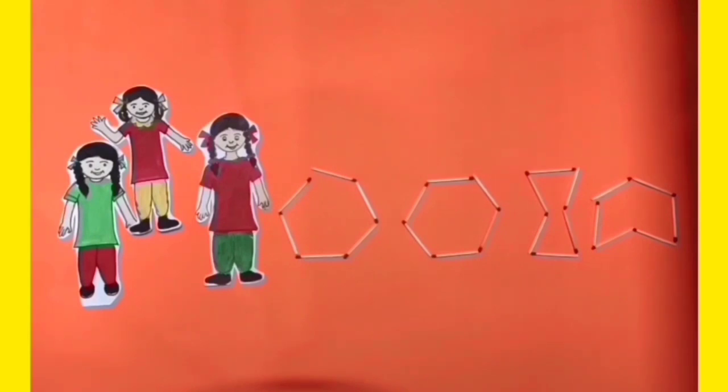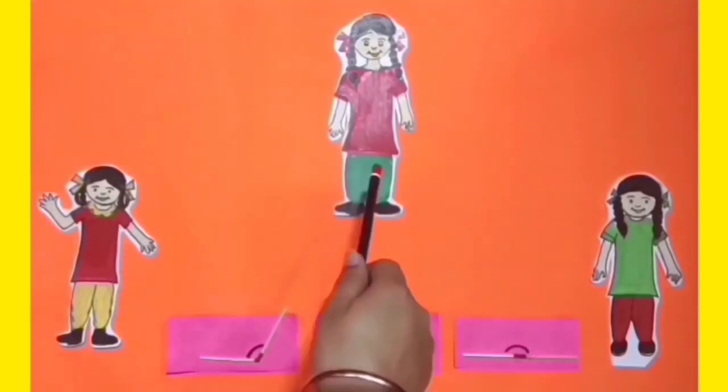After getting no reply, she tells them that all are closed except figure A. Daljeet asks them to make any figure with two maths tricks. They made following figures.